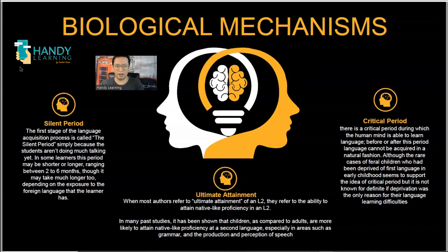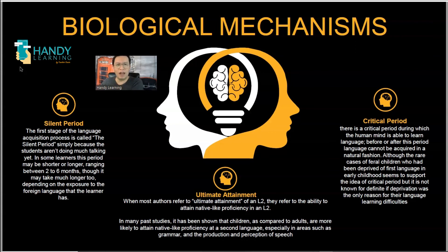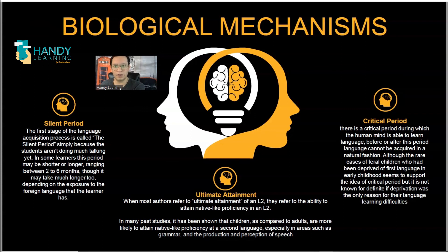Finally, we have the ultimate attainment. This period is basically when we reach native-like skills in the second language — writing, speaking, listening and reading. When we reach that native-like proficiency level, then we could say that we have reached the ultimate attainment of a language. Biologically, in natural terms, this ultimate attainment should be reached by the age of 15 or 16; however, it is still being developed during the whole life of a person. These are all the mechanisms that are part of language learning.